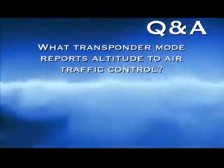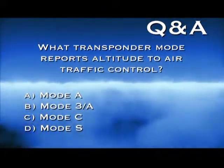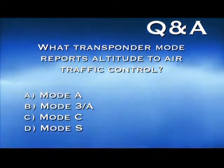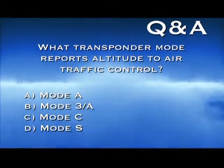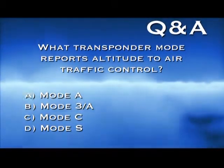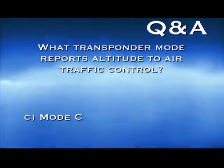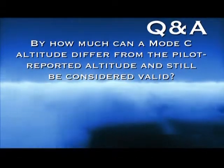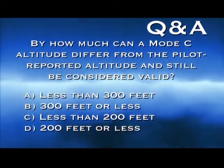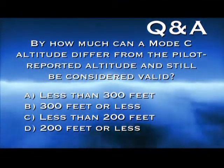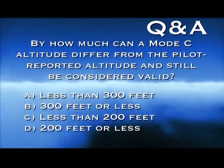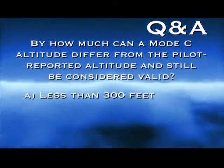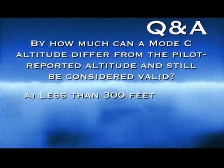What transponder mode reports altitude to air traffic control radar systems? A, Mode A; B, Mode 3A; C, Mode C; or D, Mode S? The answer is C — Mode C is the function that reports altitude. By how much can a Mode C altitude differ from the pilot reported altitude and still be considered valid? The answer is A — the pilot reported altitude must differ by less than 300 feet in order to be considered valid.